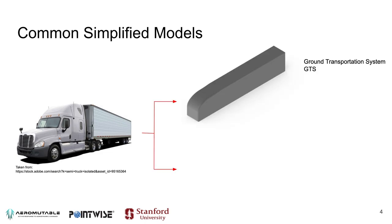Two of the most common simplified models are the Ground Transportation System model, which is a highly simplified version of a truck. It takes away the mirrors and antennas, changes the entire front of the vehicle into just a curved surface, removes the gap, and creates a flat back. It's effectively an elongated bluff body, and it's a model very commonly used to study the wake of the vehicle and its effect on overall drag.